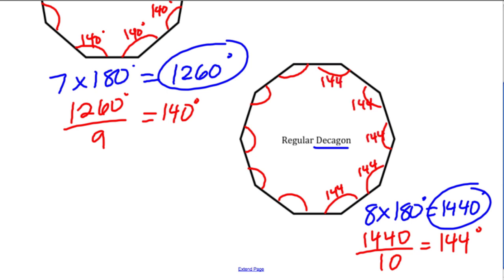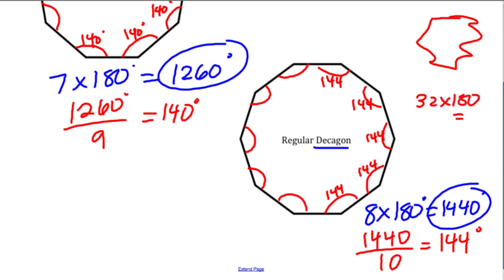Sometimes on your EQAO test or unit test you'll be asked about a 34-sided figure — please don't try to draw it. 34 sides means 32 triangles, and you multiply that by 180 then divide by 34. There's a pattern and every single shape follows the same rule: always two less triangles than sides.